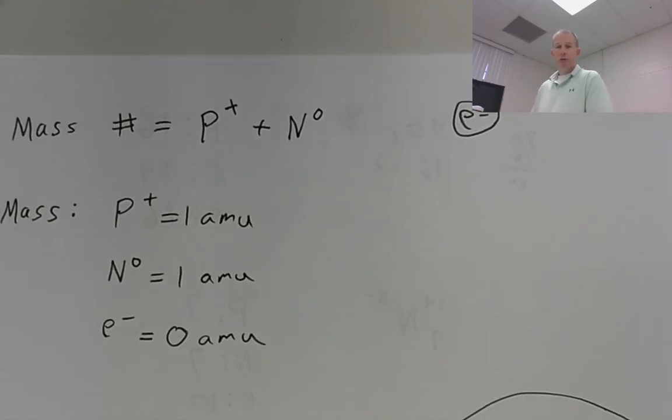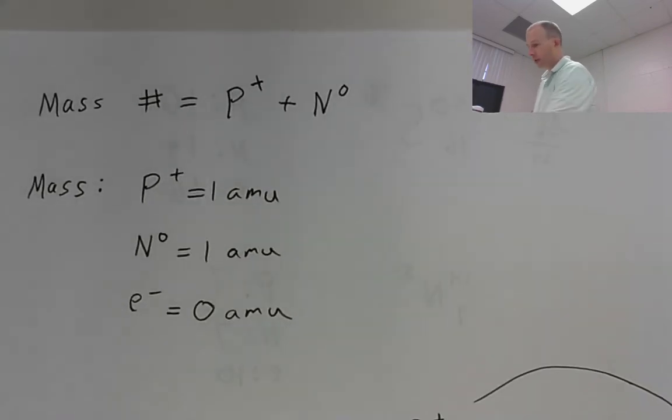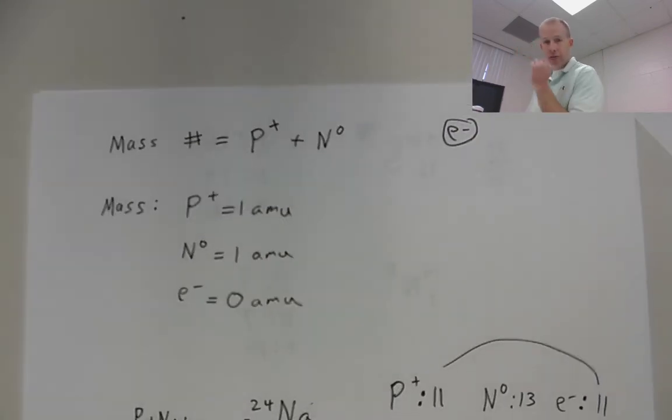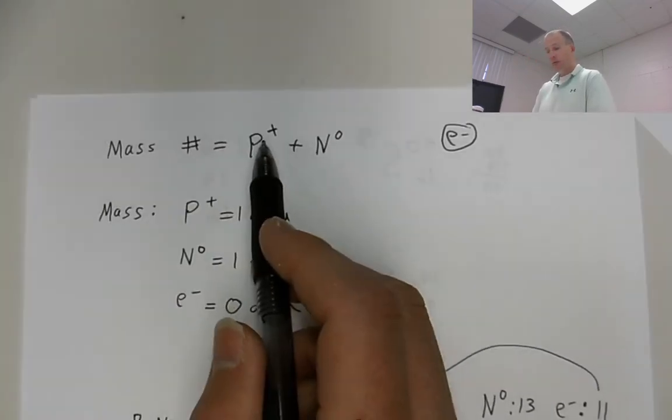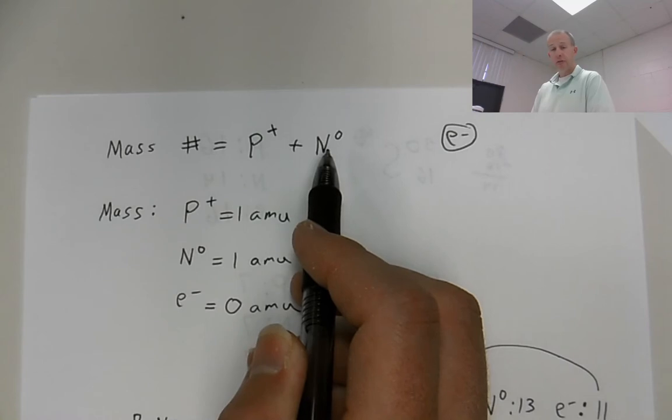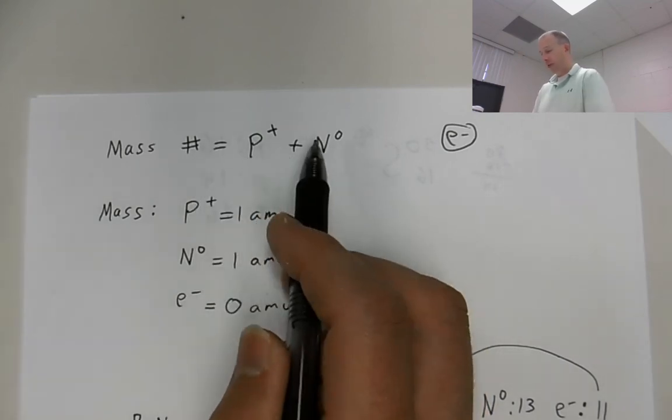All right, hi. I'm going to use this time to review the isotope notation stuff that we already talked about. I just want to make sure you have a good backing on that and can do any of the problems you might have to do. So to begin with, a few things. First, just quick review. Remember we said that the mass number is equal to the protons plus the neutrons. So the mass number is the sum of the protons and the neutrons.